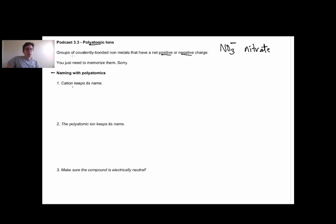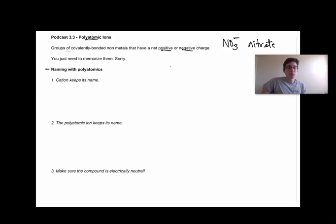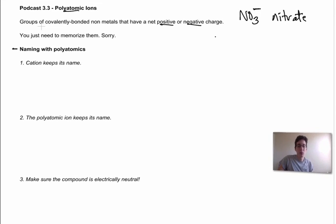But pretty much naming with polyatomics is exactly the same as what we've done before, so the compound that we're going to look at is NaNO3. Just like with binary compounds, the cation will keep its name, so this is sodium, and in this case, the polyatomic ion, and these are all anions except for one, and I'll come back to that in just a minute, but the polyatomic ion keeps its name, too.